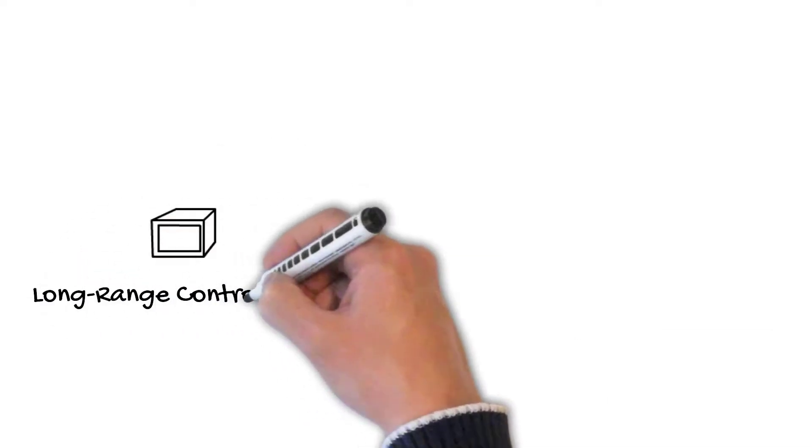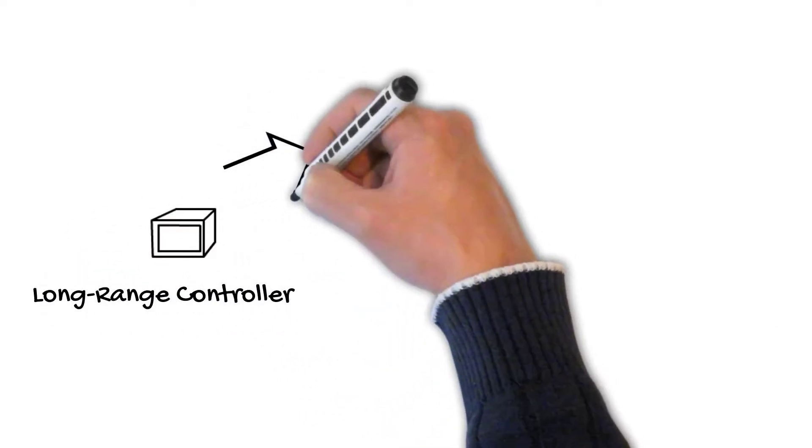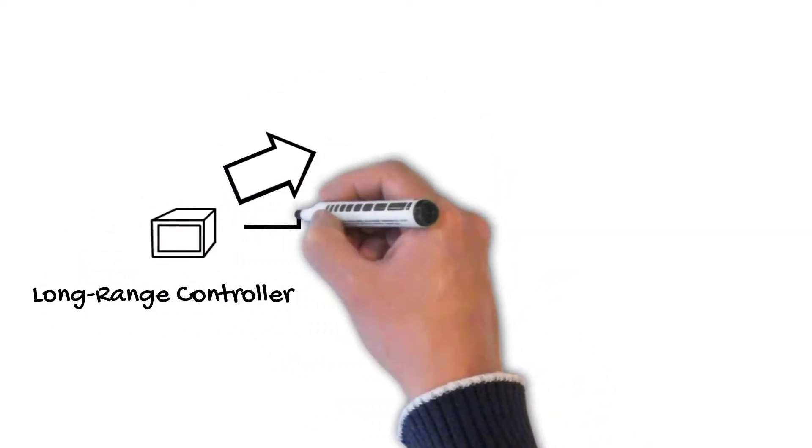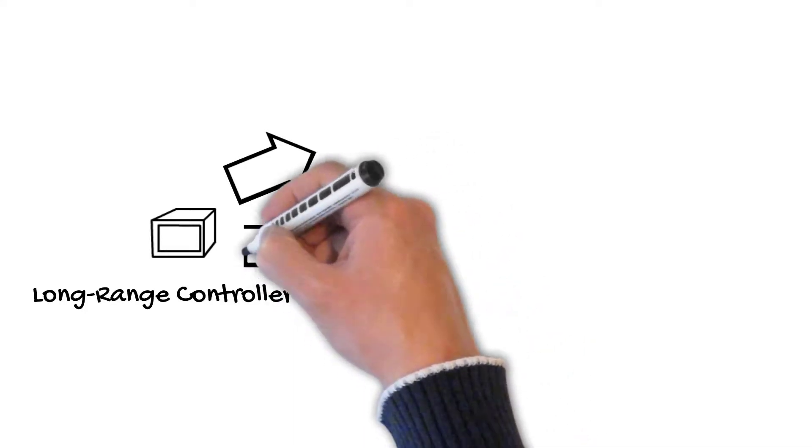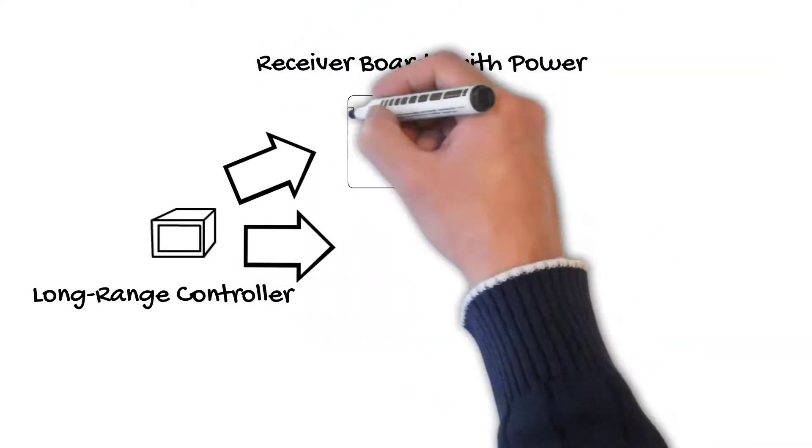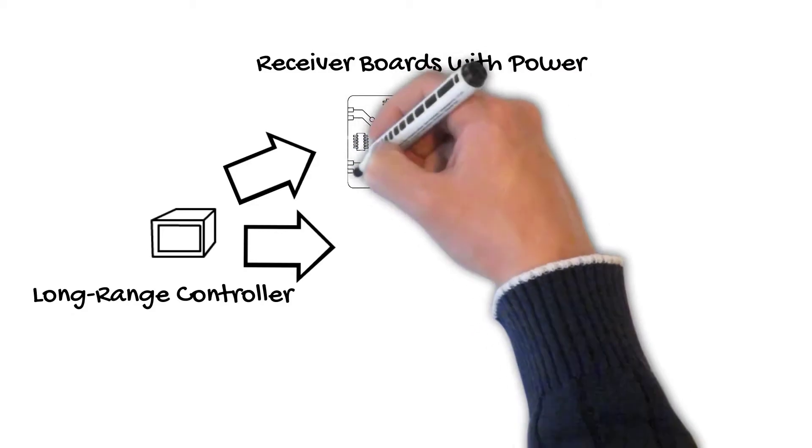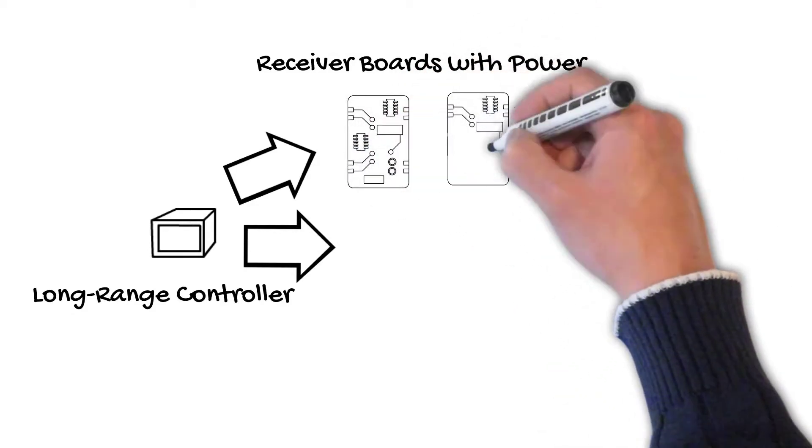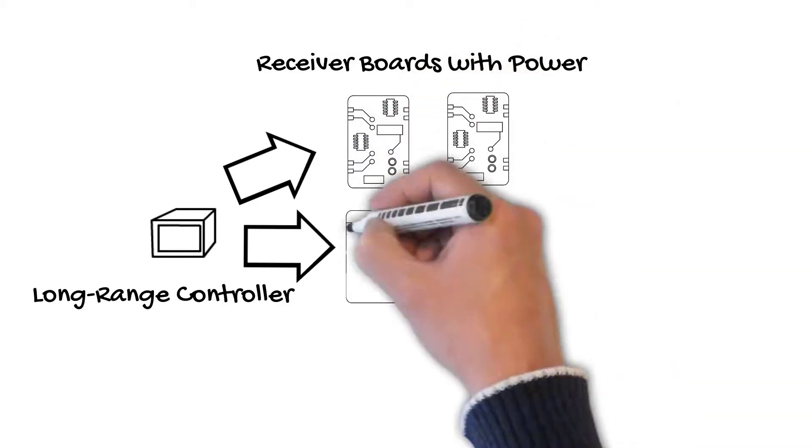There are long-range controllers, like the F-48 or the AdvoTec PixLite system, that allow you to have your controller in one place and then have receiver boards that actually output to your lights in other places. My recommendation, if you're brand new to this hobby, is to do your research, but for the most part, most people are going to want to spend the money on a long-range type controller.